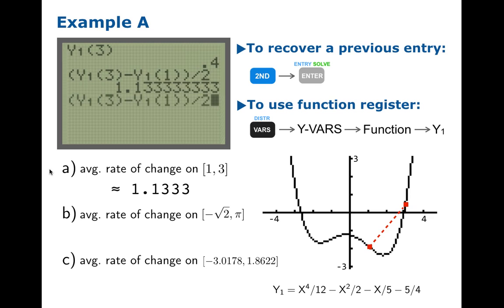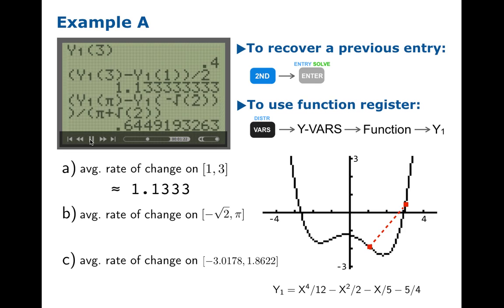Now we'd like to calculate the average rate of change on the interval from negative root 2 to pi. This calculation should look similar, but instead of 3 we want pi, and instead of 1 we want negative square root of 2. So we've used second enter to recover this previous calculation, and now we're going to edit it. We'll change the 3 to a pi, and we'll change the 1 to a negative root 2. And then we have to alter the interval width, so now it's going to be pi minus negative root 2, which is the same as pi plus root 2. When all the dust settles and we hit enter, we'll have our average rate of change. And we'll notice that this average rate of change, 0.6449 or so, is firmly between 0 and 1, just as we expected.